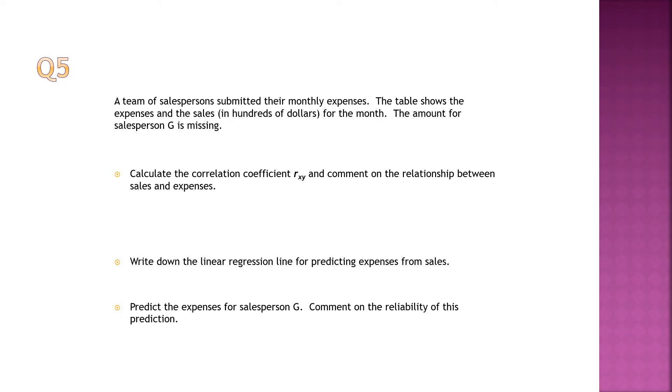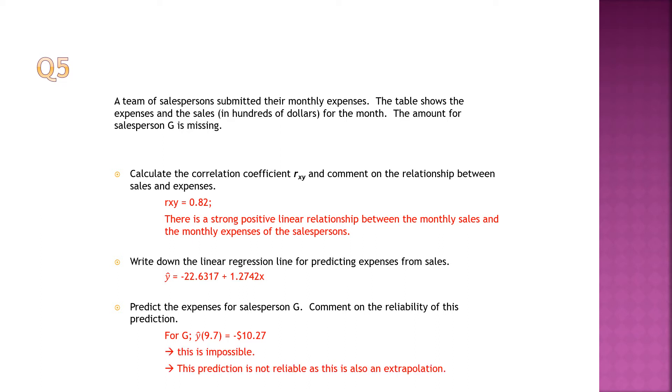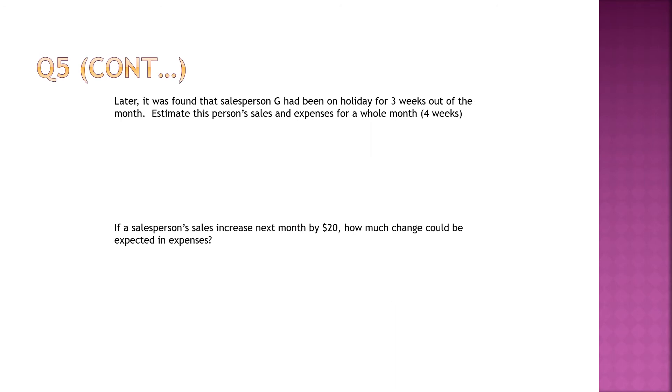All right, a team of salesperson submitted their monthly expenses for number 5. I'll go through it quickly because I think it's not so difficult. Write down the linear regression line for predicting expenses from sale. So this is your linear regression line. You predict whatever that was missing. Just make sure when you put it because you see up there is in hundreds of dollars. So when you put it in, you must make sure you put in properly because the format in the table is in hundreds. This is impossible. Why is it impossible? Because it's an extrapolation. And you cannot have negative money.